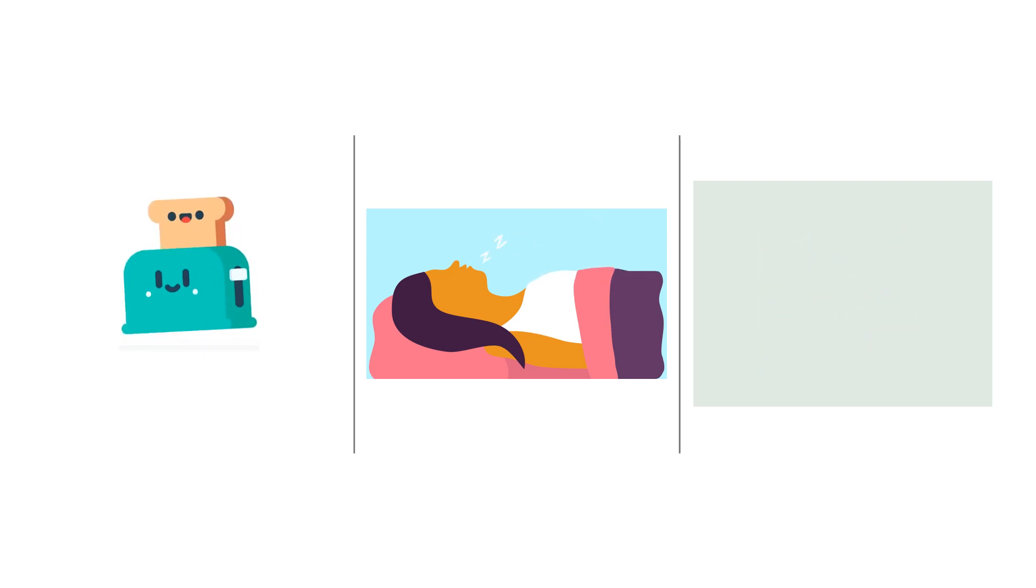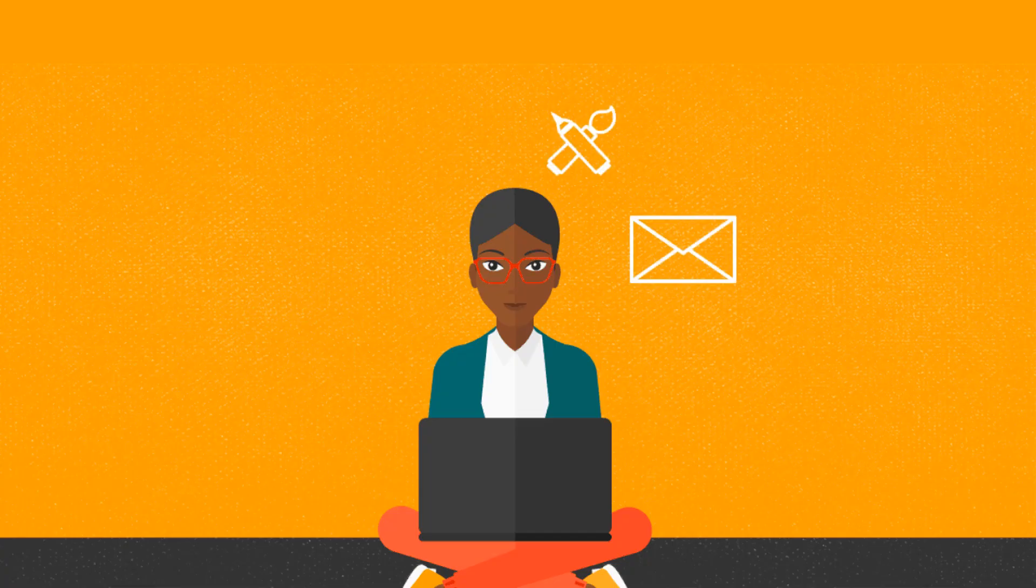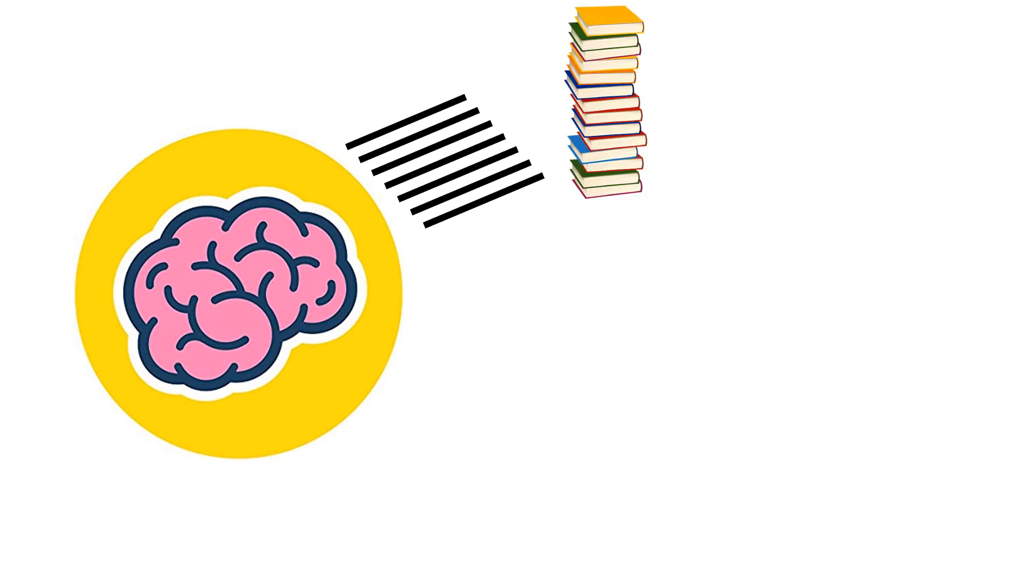One way to form a neuro association is by listening to the same playlist of music every time you study. You want to ensure this area has no distractions. Because according to Miller's theory developed in 1956, your short-term memory can only hold five to nine snippets of information at a time. And you want all of these units of focus to be focused on the task at hand, for example, studying.